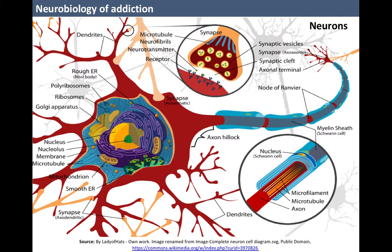Neurons are the functional units of the nervous system, considered as the cells of the mind. They specialize in detecting changes in the environment and responding to them. Neurons also coordinate the functions of the organism itself. In broad terms, they consist of a cell body or soma and extensions of two types: dendrites and axons.